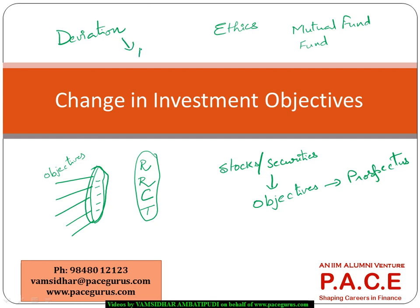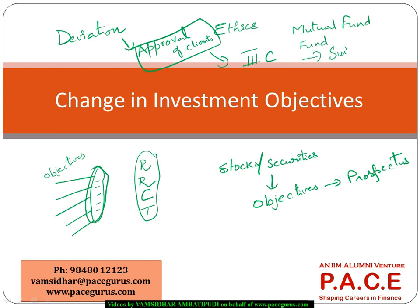A material deviation first requires approval from the client. In case the approval does not come up or is not secured, it is a direct violation under Standard 3C of the CFA Institute Standards of Professional Conduct, especially with respect to assessing the suitability of the application to the risk and return profile and the investment objectives of the client.